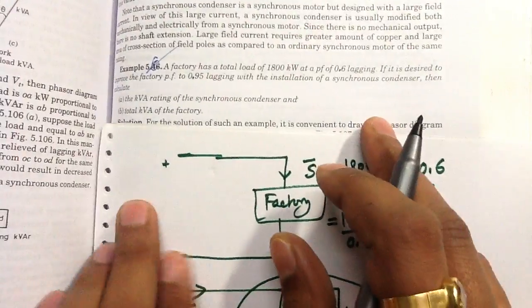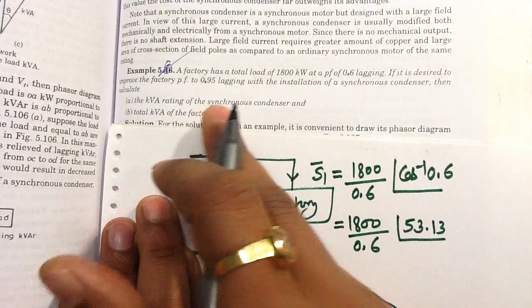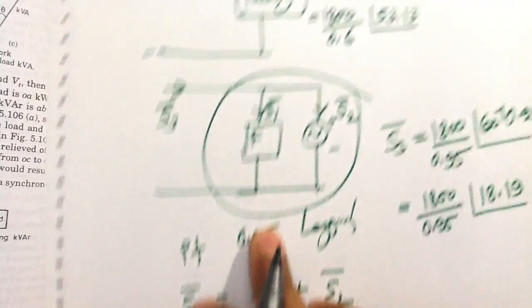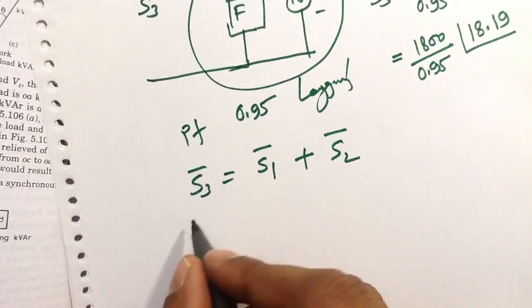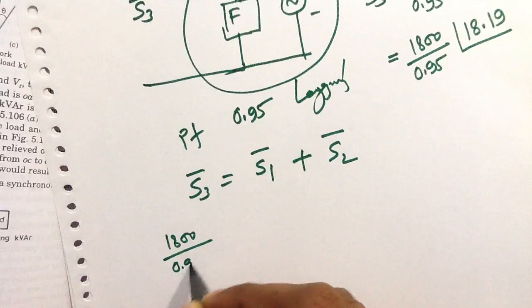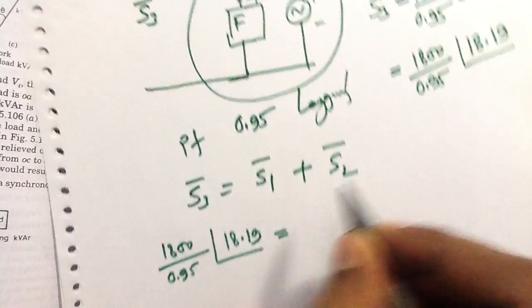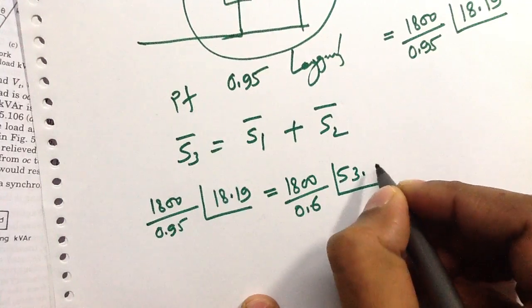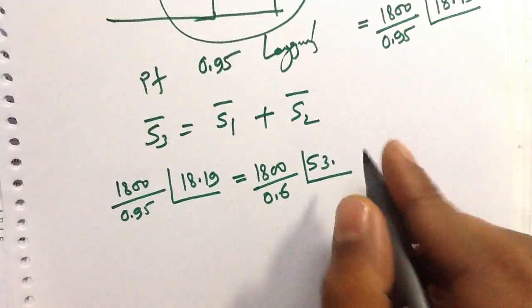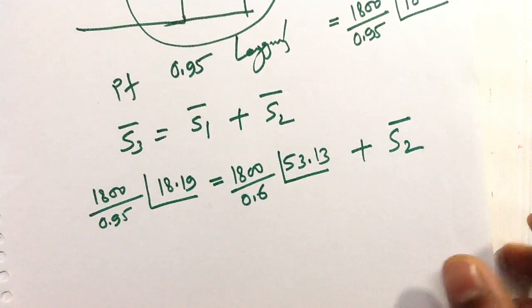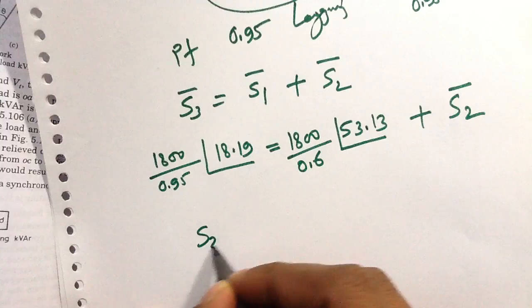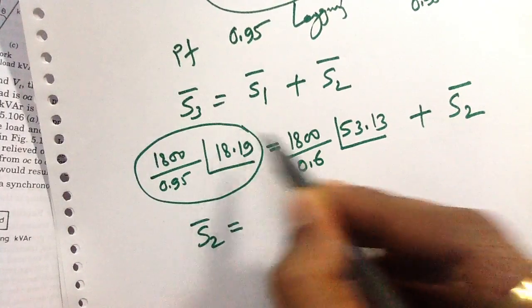We have to calculate the KVA rating of the synchronous condenser used. Substituting the values of S3 and S1 into the equation: S3 equals 1,800 divided by 0.95 at angle 18.19 degrees, and S1 equals 1,800 upon 0.6 at angle 53.13 degrees, plus S2. To find the KVA rating of the synchronous condenser, we calculate S2 equals S3 minus S1.